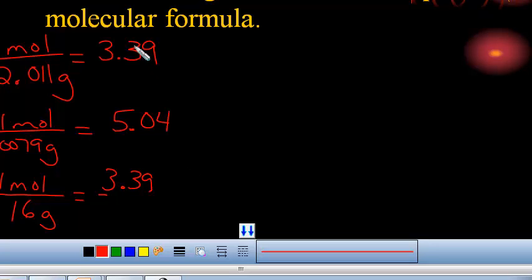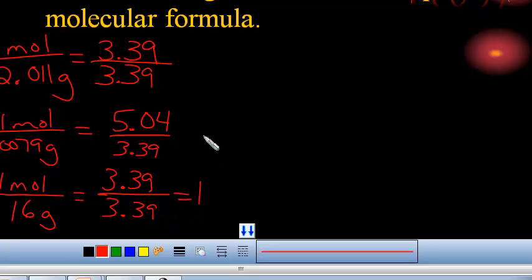Alright, now next step, you pick the lowest of the numbers. So here's your first one. So we're going to divide everybody by that lowest number, which, lucky for us, two of them end up with the same answer.